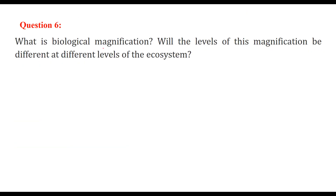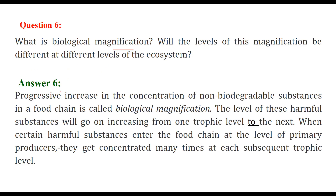What is biological magnification, and will the levels of magnification be different at different levels of the ecosystem? The progressive increase in the concentration of non-biodegradable substances in a food chain is known as biological magnification. When certain harmful substances enter the food chain at a very low or primary level, they get concentrated many times when they reach the higher trophic levels — that is how biological magnification occurs.